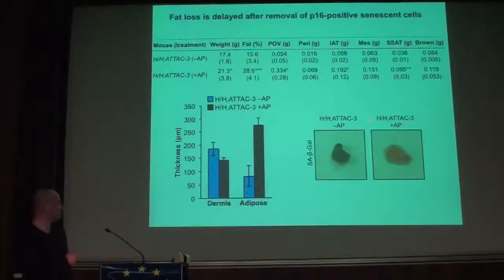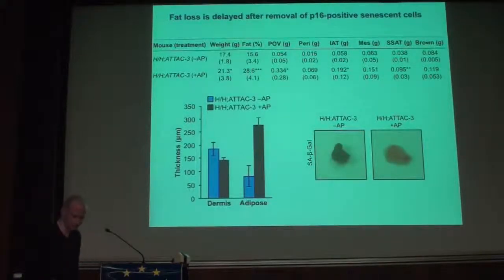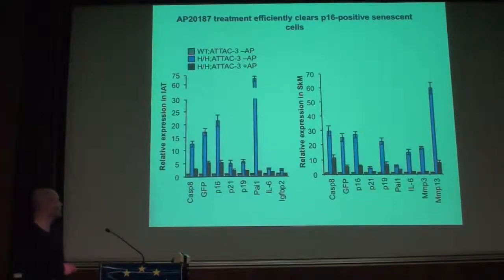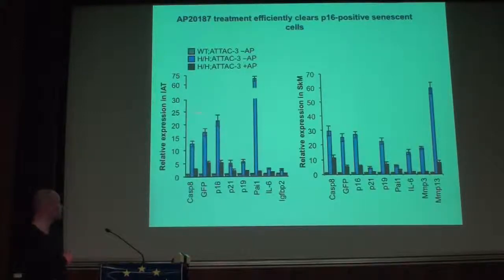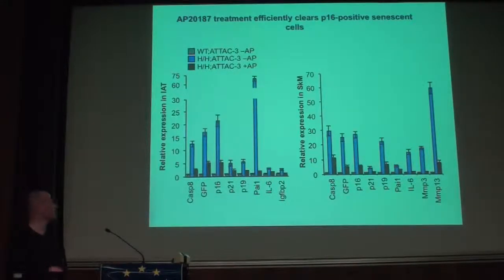Treated animals clearly show no senescent cells remaining — the drug in combination with the transgene efficiently removes all senescent cells. This is confirmed by RT-PCR, where hypomorphic animals have high levels of P16, transgene expression, and other senescence markers in inguinal adipose tissue and skeletal muscle. After drug treatment, expression levels go down, indicating that drug treatment efficiently clears P16-positive cells.